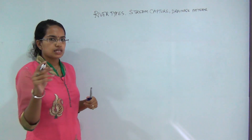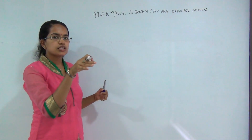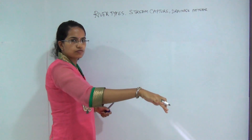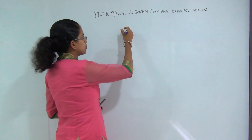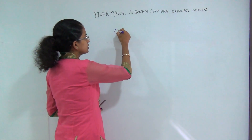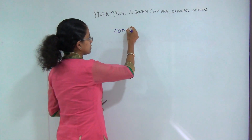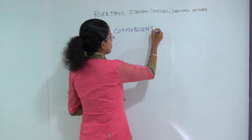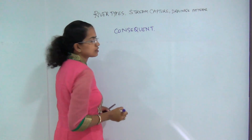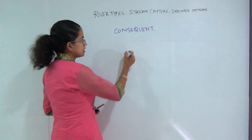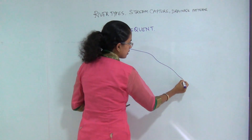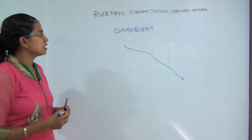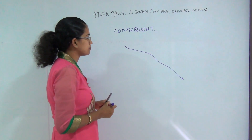So stream types: if a river is moving along the slope or the direction of the slope, it would be known as a consequent river, or a consequent stream. So if a river is moving along the direction of the slope, it would be a consequent stream.